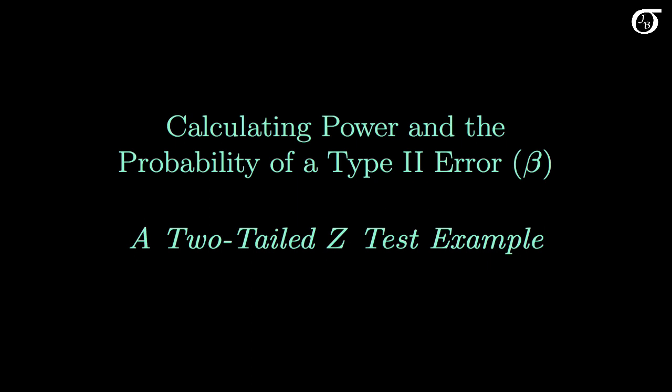Let's work through an example of calculating power and the probability of a type 2 error. Here I'm going to work through a two-tailed example involving a z-test on a single mean, but the same ideas apply in many other situations as well.